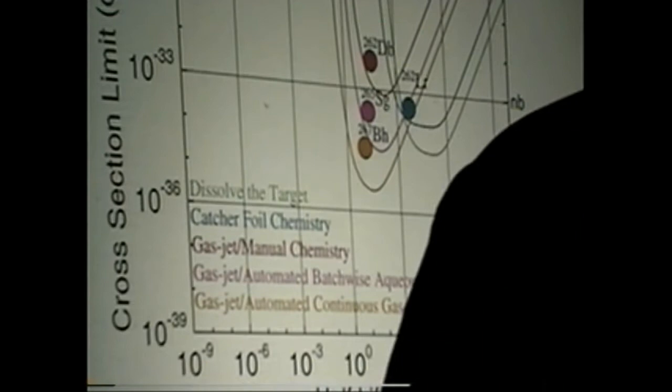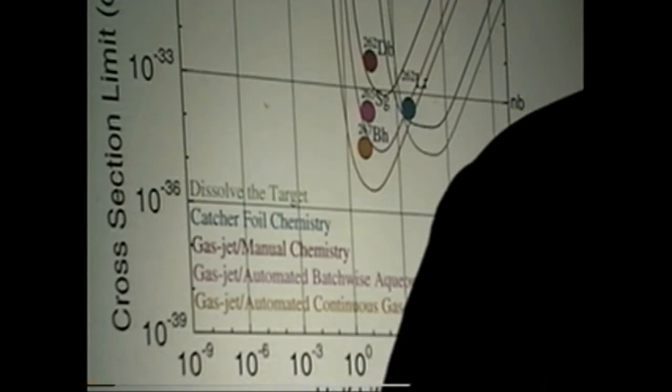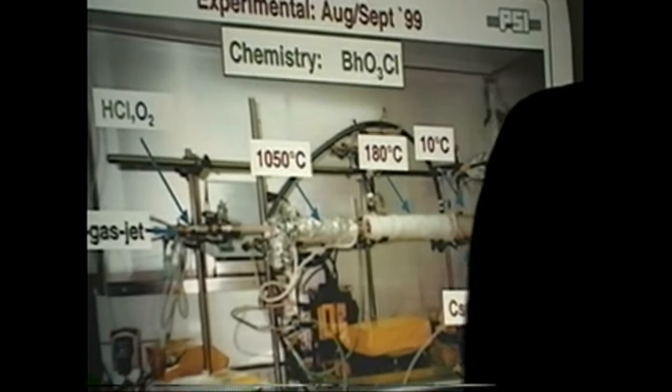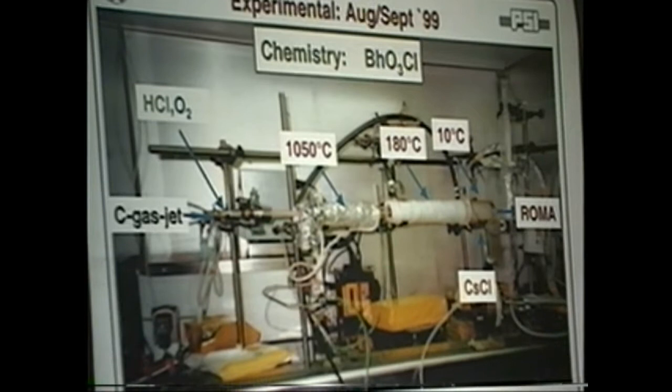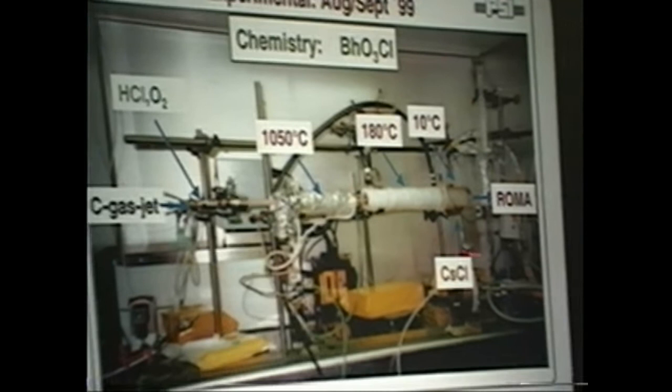And I have a picture here of the device that we used recently for element 107 chemistry. Here we have the gas jet coming in, a hot section where we feed in reactive gases, and then an isothermal section where we're doing something very much like standard gas chromatography, just at temperatures like 180 degrees. They come out, they reattach to aerosol particles for a gas jet, and then it goes away to the detection system.